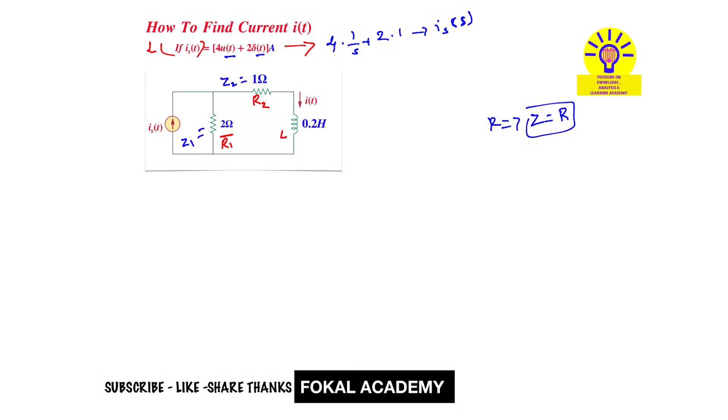Now what is the impedance of inductor? For inductor, the impedance ZL equals always SL. So it becomes ZL equal to, inductor is equal to 0.2 Henry, that is 0.2 S. So here ZL equal to 0.2 S.